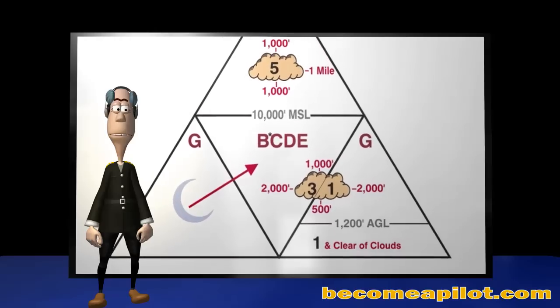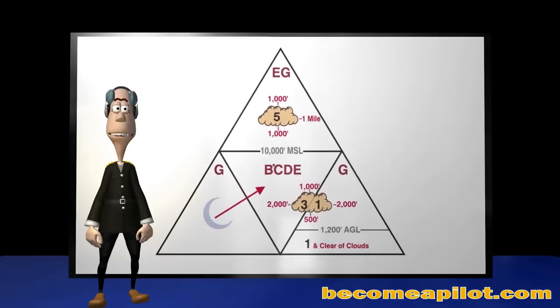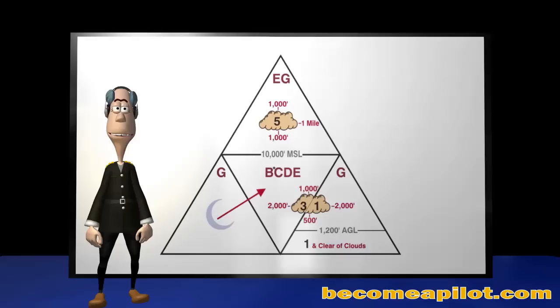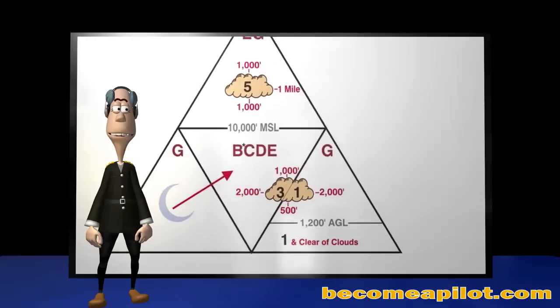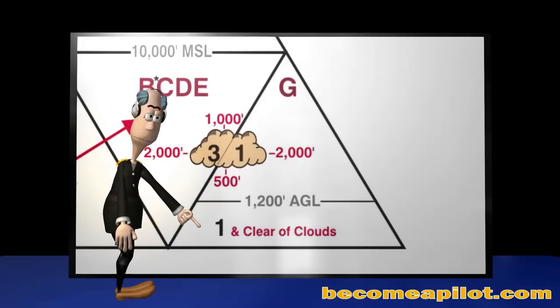So, here are a few additional tips for interpreting this memory aid. First, the lowest visibility in cloud clearance in which pilots can fly under visual flight rules is 1 mile while remaining clear of clouds. And not surprisingly, this represents the minimums for special VFR flights.